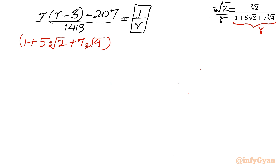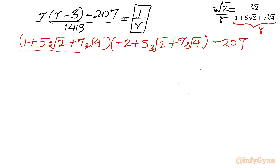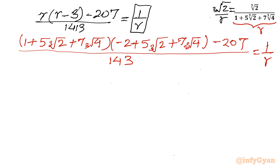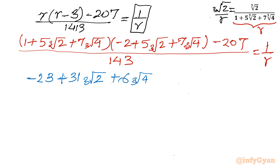R minus 3 gives a constant term of minus 2. So we have minus 2 plus 5 cube root 2 plus 7 cube root 4 in that bracket. Expanding the product of the two brackets and simplifying, we get minus 23 plus 31 cube root 2 plus 6 cube root 4 in the numerator. Dividing 1413 by 6 gives 471 after cancellation, so the left hand side equals (minus 23 plus 31 cube root 2 plus 6 cube root 4) divided by 471, which equals 1 over R.